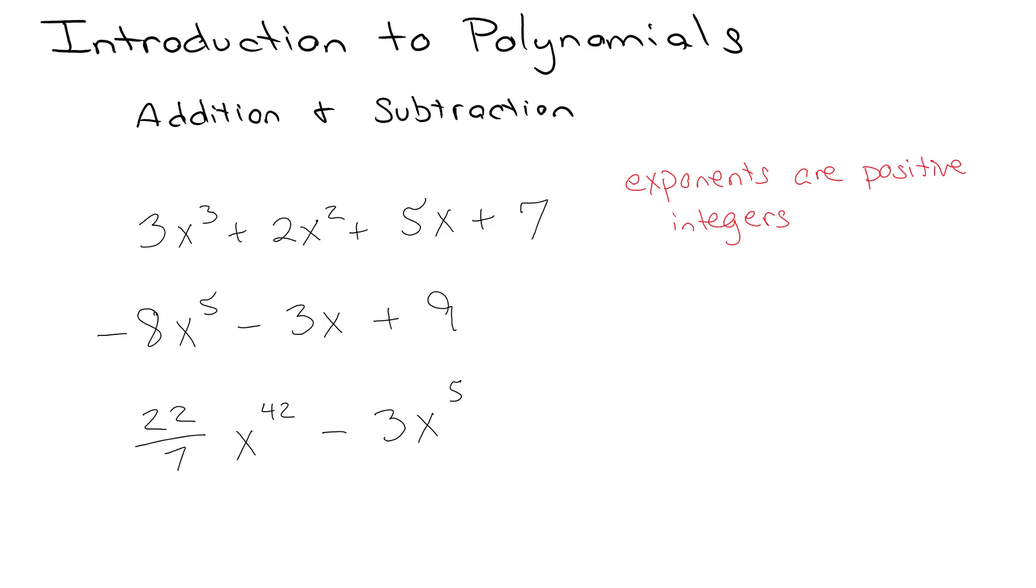So any of your exponents here, these are all exponents. Remember this is an exponent, it's a secret exponent, it's 1. I could throw a 1 in there. That could be a 1, but it's still a positive integer. All the exponents have to be positive integers.